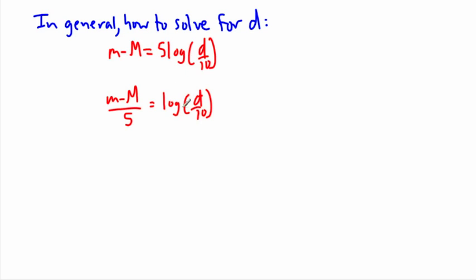I'm just showing you in general how it works. Well, then I want to undo the log in order to get at D. So to undo the log, I take 10 to the power of both sides. That means 10 to the power of, this may look ugly, but it's 10 to the power of m minus M over 5. That equals D over 10. And therefore, if I want D in general, D is just going to be, I have to multiply everything by 10. So I could say D then is 10 times 10 to the power of m minus M over 5. This will work always.